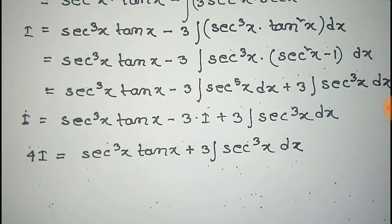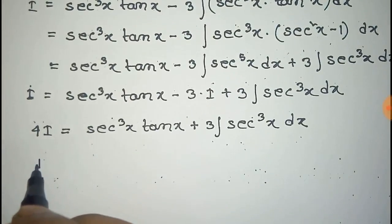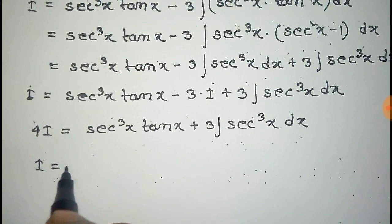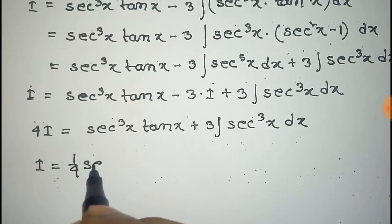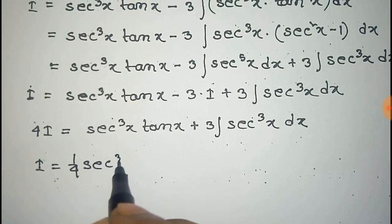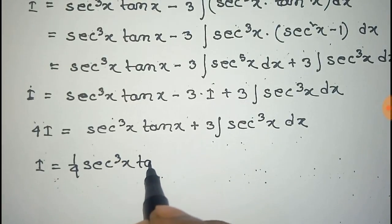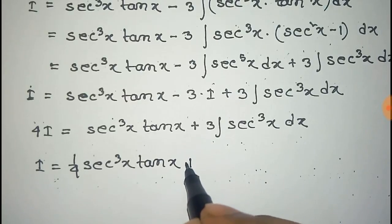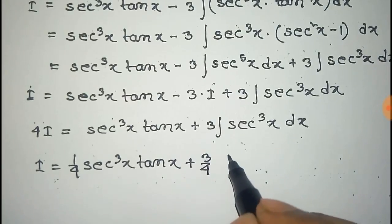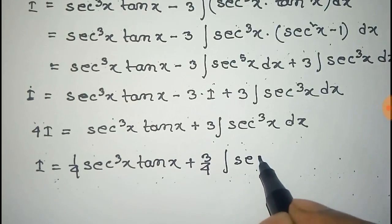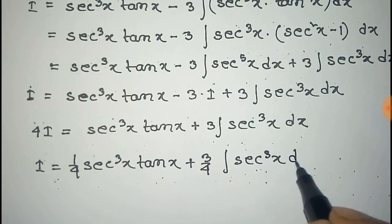Now, for this integration of sec cube x, we have I equal to one fourth sec cube x tan x plus 3 by 4 times the integration of sec to the power 3x dx.